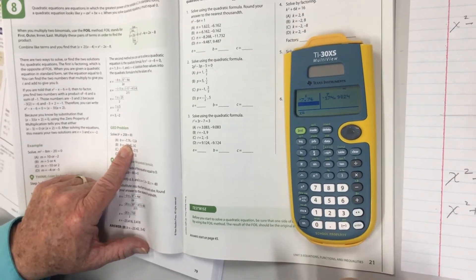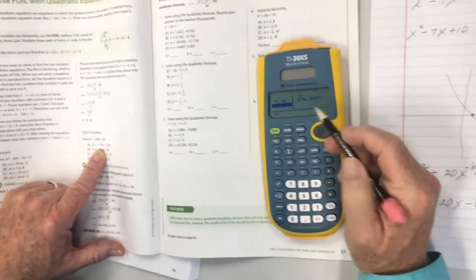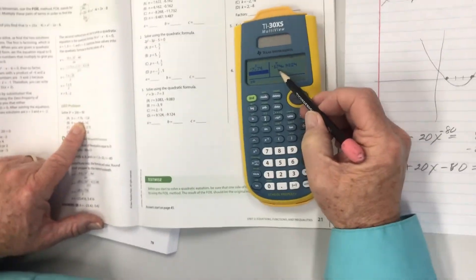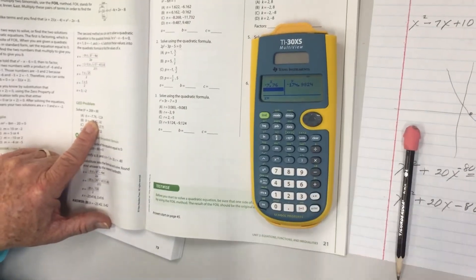...and press enter, and I get a number that is negative 174.9824, which is not zero or not even close to zero.